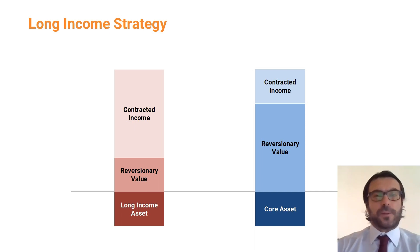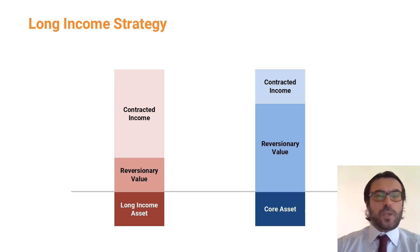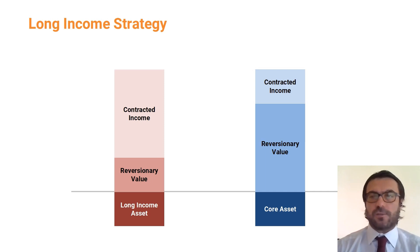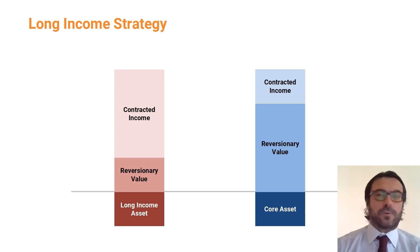The value of a property with such a long lease is primarily determined by the contracted income. The value of any asset can be calculated as the present value of the expected income of that asset, discounted for a certain expected return. When we have such a long lease, the bulk of the return will come from the lease, and the residual part — called the reversionary value — represents a small portion of the present value of the asset. Conversely, for a typical core asset with two to three years of contracted income, the present value will be primarily in the reversionary value.